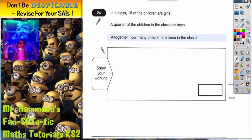Question 24 is the last question on the paper, so we'll expect it to be a bit harder. It's going to be a level five question. It says in a class, 18 of the children are girls, a quarter of the children are boys, and we've got to figure out altogether how many children are in the class.